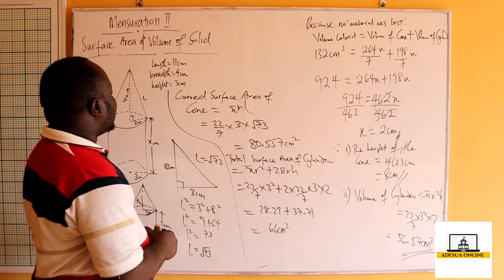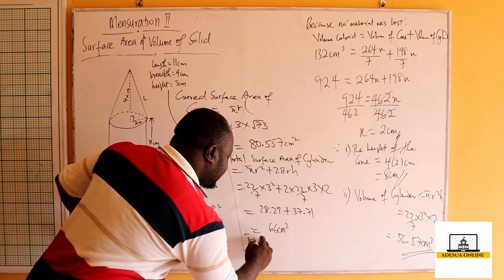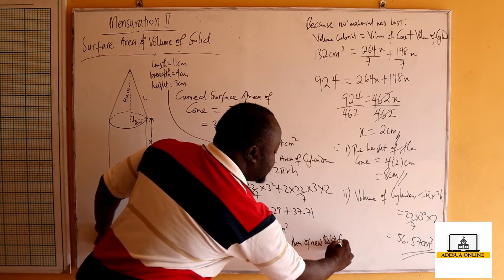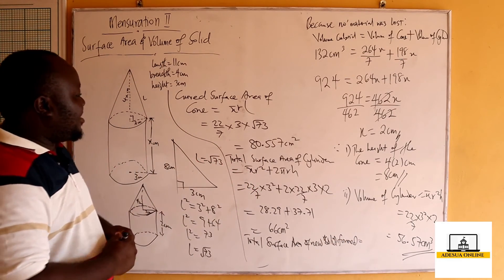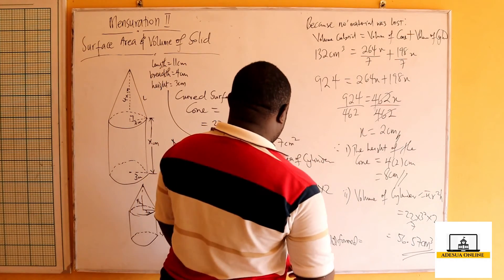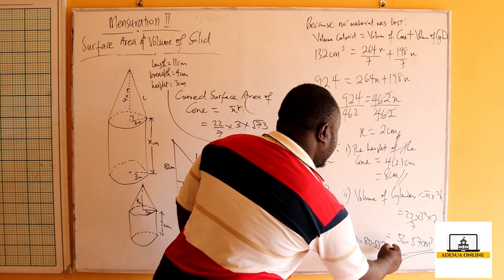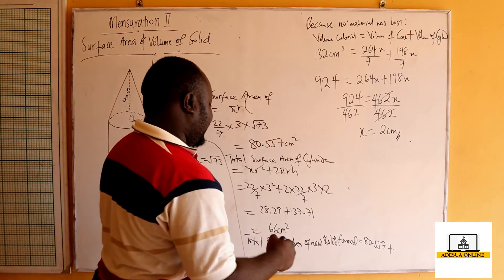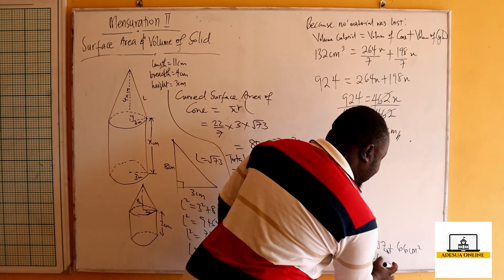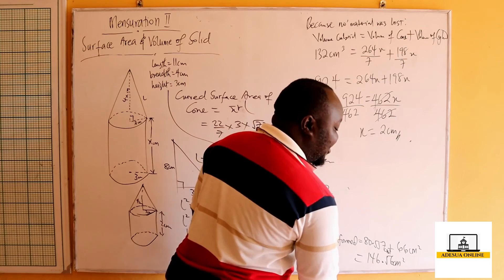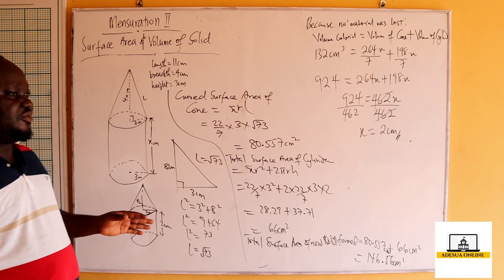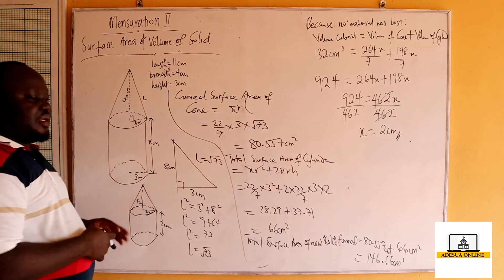The total surface area of the cylinder is 66 square centimeters. Therefore, the total surface area of the new solid form equals the curved surface area of the cone plus the total surface area of the cylinder, which is 83.557 plus 66, giving a total surface area of 146.56 square centimeters.